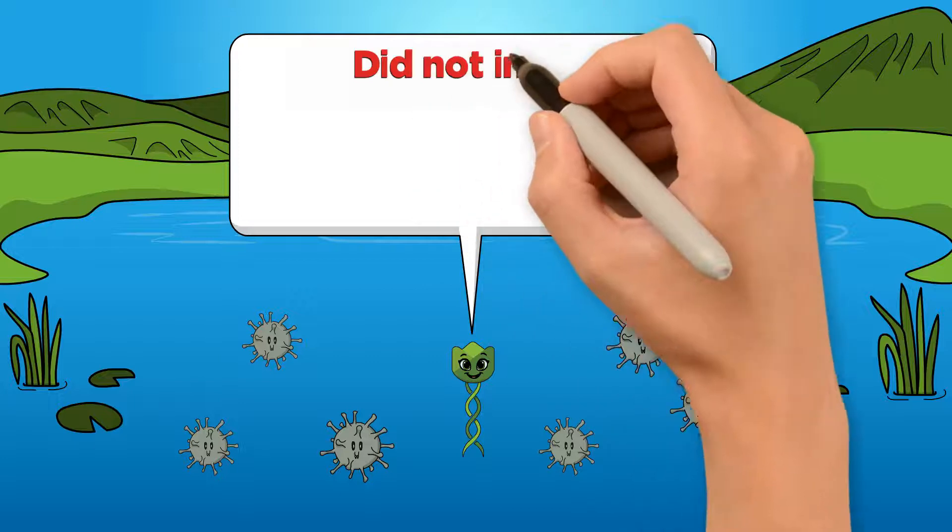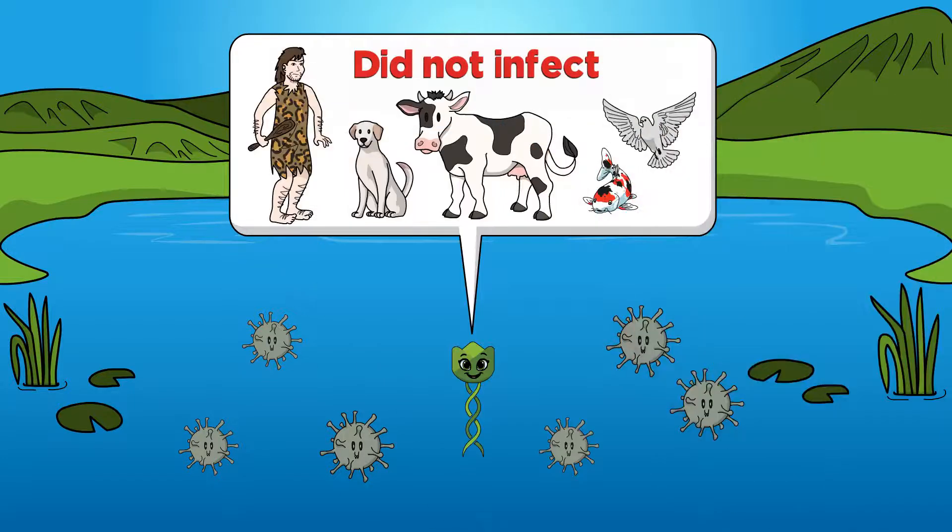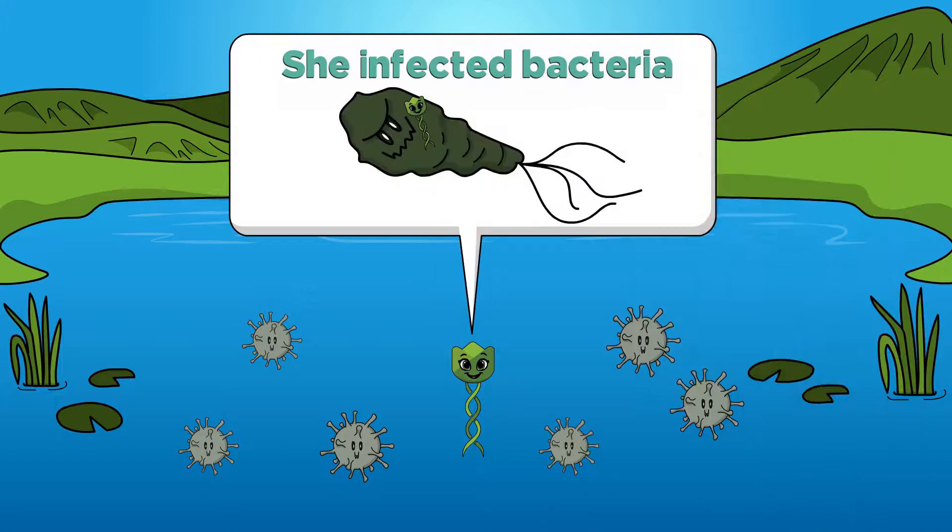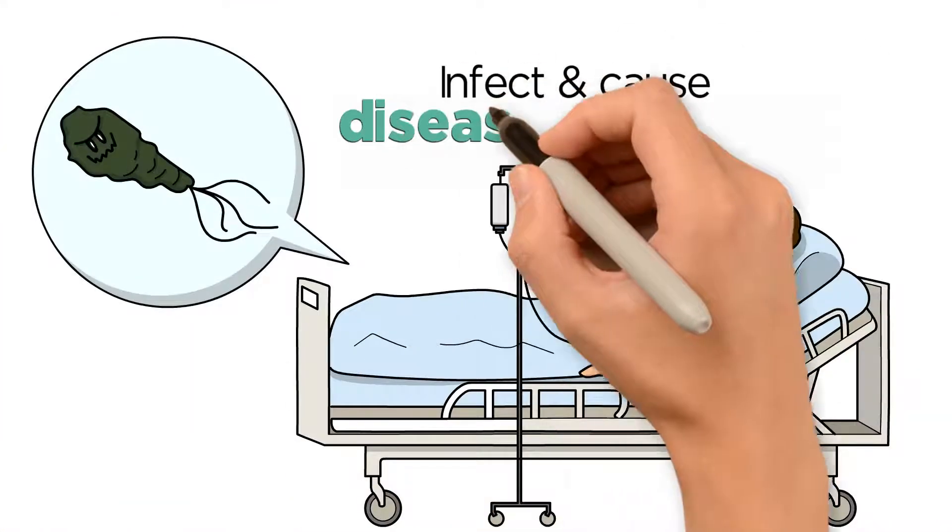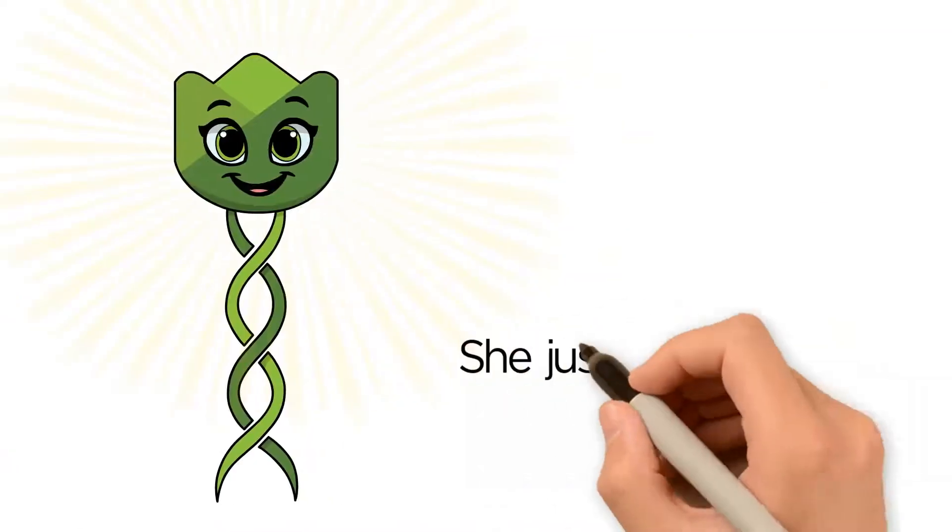Taylor's special ability was that she did not infect animals or humans. No, she infected bacteria. Not just any bacteria, but the bacteria that infect and cause disease in humans. She just needed to be discovered.